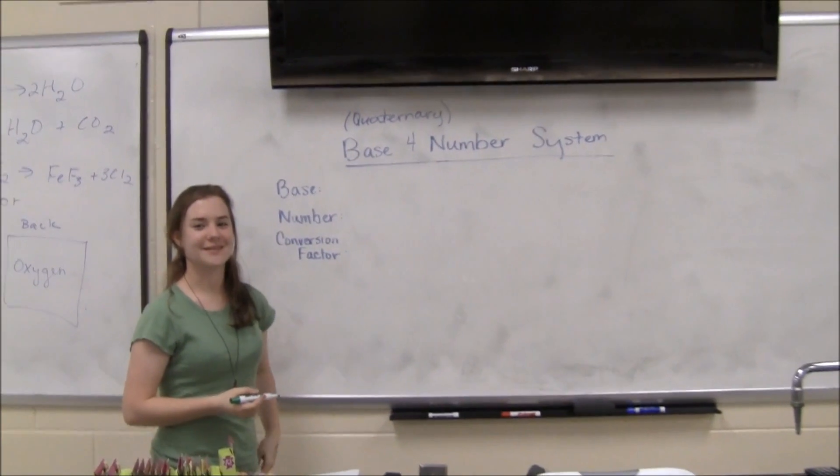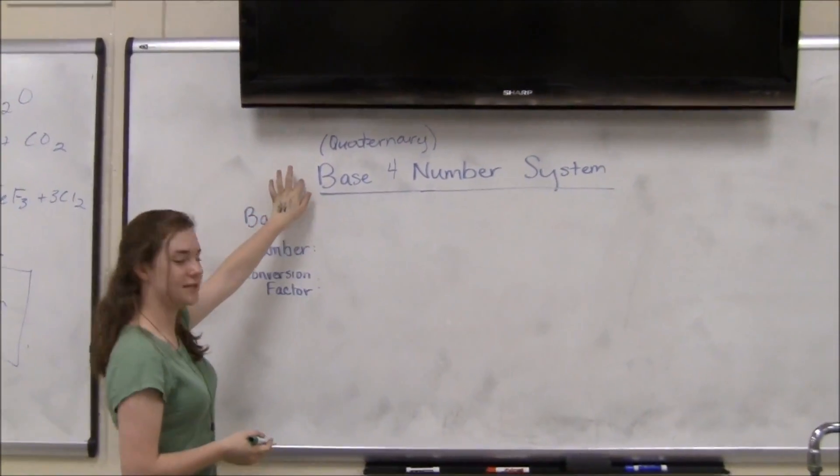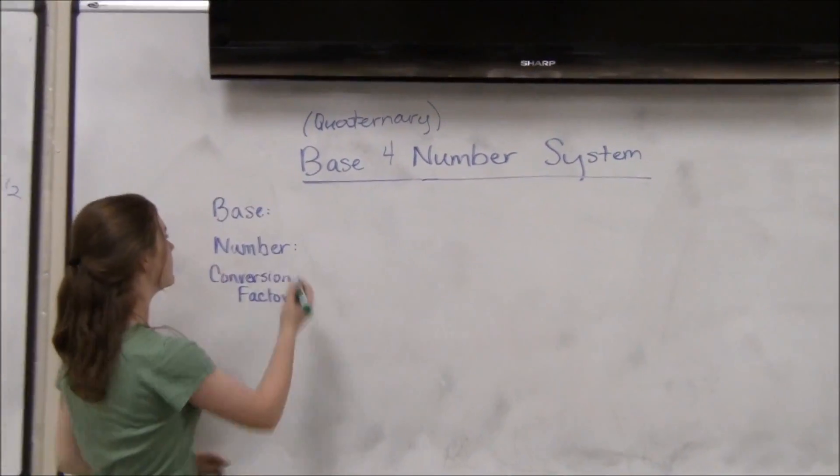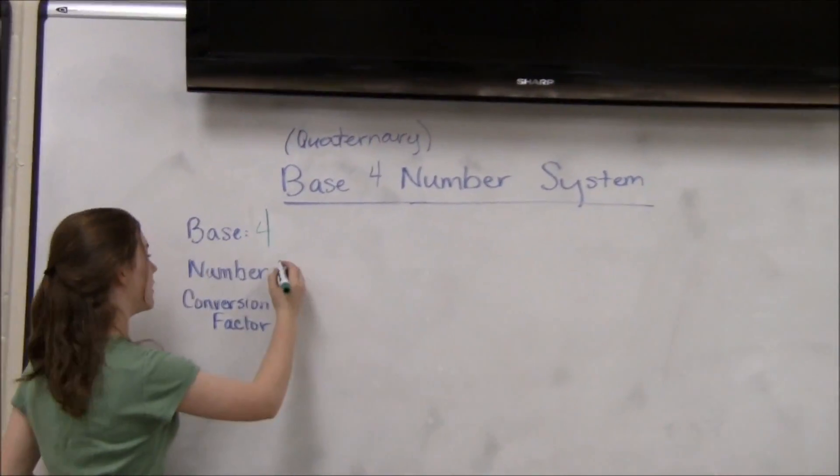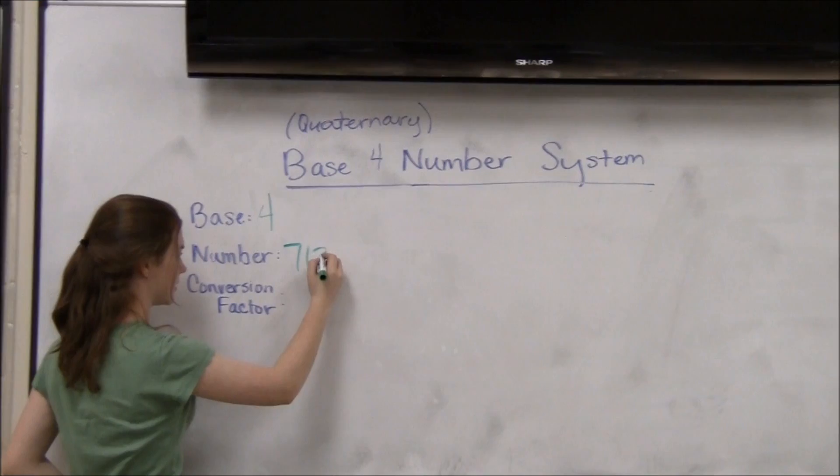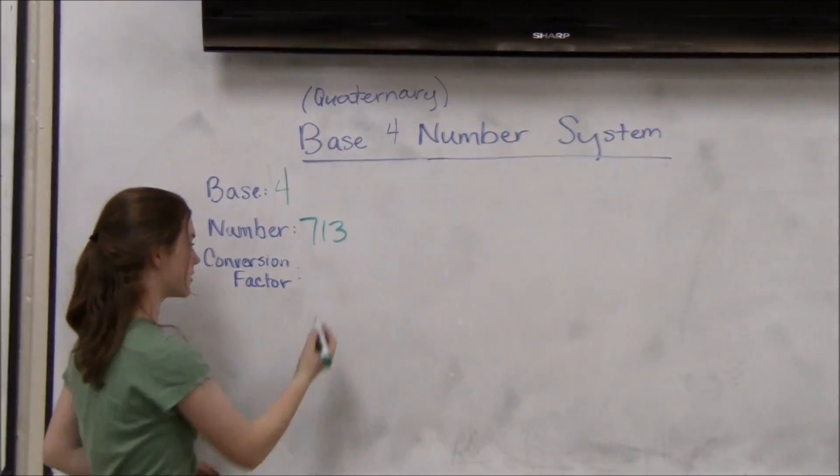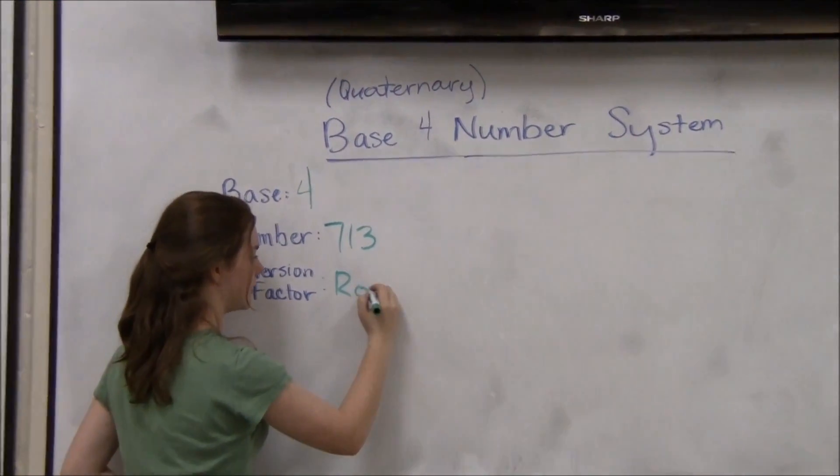Okay, for this number-based conversion, we'll be using a base-four number system, also called quaternary, and the number we'll be converting in decimal form is 713. The conversion factor we'll be using are Roman numerals.